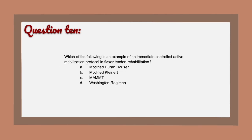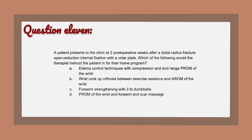Question 10: The correct answer is C — the MAMMT, which supports short arc motion. Immediate controlled active mobilization, or ICAM, is what this question is asking for. The other three protocols listed — modified Duran-Hauser, modified Kleinert, and Washington regimen — are considered immediate controlled passive mobilization protocols. Review the differences between all of the various flexor tendon protocols.